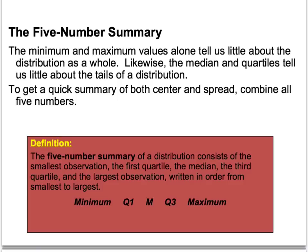The five-number summary includes Q1, the median, and Q3, plus the minimum and maximum. These five numbers quickly describe what a data set looks like and divide the data into quartiles. Twenty-five percent of the data will always fall between any two adjoining numbers — between the minimum and Q1, between Q1 and the median, between the median and Q3, and between Q3 and the maximum.